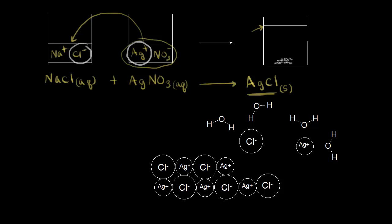We would still have some ions remaining in solution — sodium cations and nitrate anions. So we could write NaNO3 (aq), meaning those ions are still present in solution.